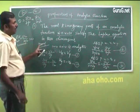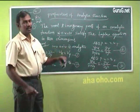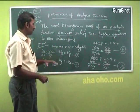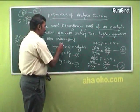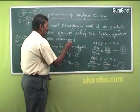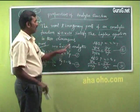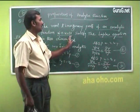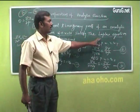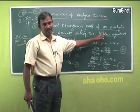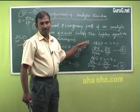Therefore ∂²v/∂x² + ∂²v/∂y² = 0. It satisfies the Laplace equation. Therefore the real and imaginary parts u and v of an analytic function satisfy the Laplace equation.